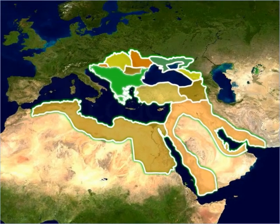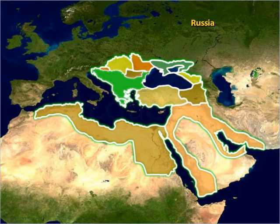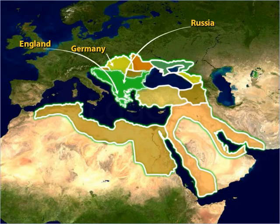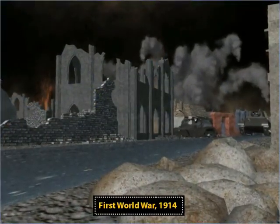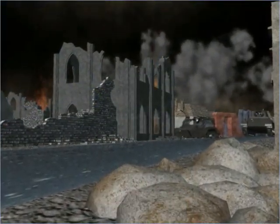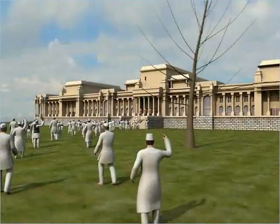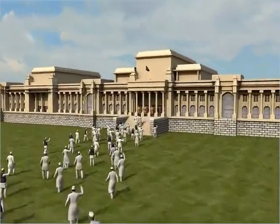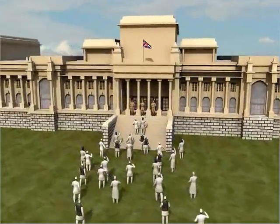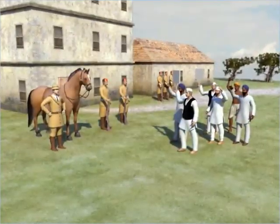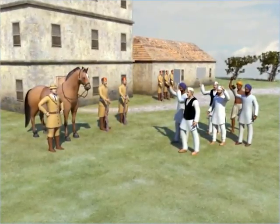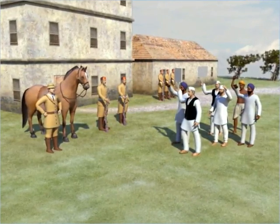Things got worse when existing big powers such as Russia, England, and Germany wanted to extend their power over the Balkan area. The Balkan Wars led to the First World War in 1914, which destroyed most of Europe. Many countries colonized by the European powers began to have anti-imperial movements that were nationalist in nature, as these countries wanted to break away from colonial rule and adopt the idea of nation-states.